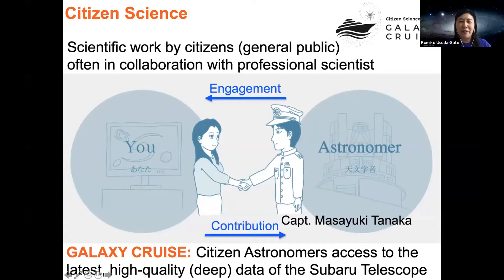As you may know, citizen science is scientific work by citizens or the general public, often in collaboration with professional scientists. In citizen science, there are benefits for both sides. Citizen scientists can access the latest high-quality big data of the Subaru telescope. On the other hand, researchers like Dr. Masaki Tanaka, the captain of Galaxy Cruise, can collect a bunch of classification data.